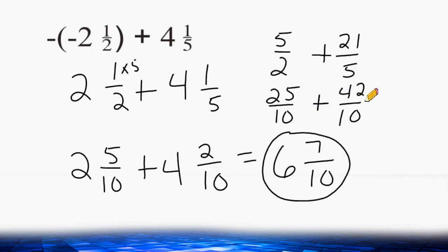25 tenths and 42 tenths would give us a total of 67 tenths. Now we can take this improper fraction and change it back into a mixed number by dividing the numerator by the denominator. And 10 can be divided into 67, a total of 6 whole times, which gives us 60. And that leaves us with 7 tenths remaining.